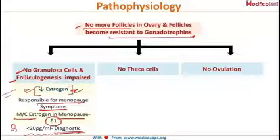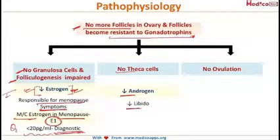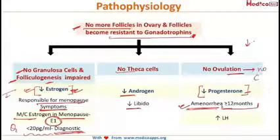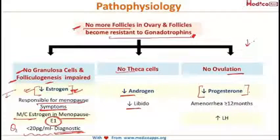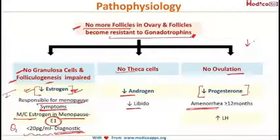With no more follicles, there will be no theca cells, leading to decreased androgen levels initially and decreased libido. No folliculogenesis means no ovulation, and subsequently no corpus luteum formation. Since the corpus luteum releases progesterone, there will be a decrease in progesterone levels. Because of decreased estrogen and decreased progesterone, there will be amenorrhea.